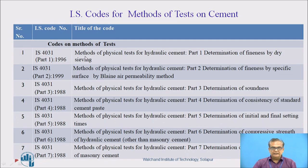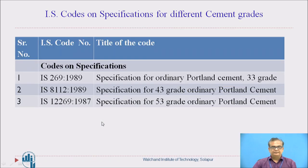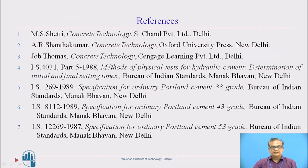Here is a list of IS codes used for different tests on cement. These IS codes are used for different tests on cement — you can see that part 5 is used for the setting time test. These IS codes give specifications of different tests on cement, and these three IS codes are meant for three different grades of cement. These are the references for today's session.